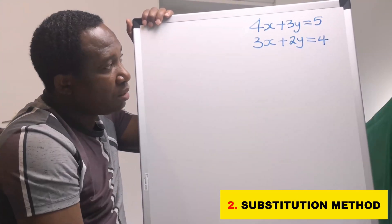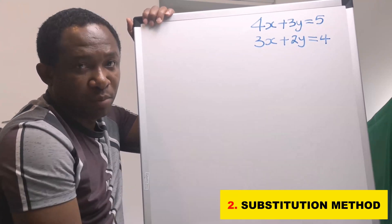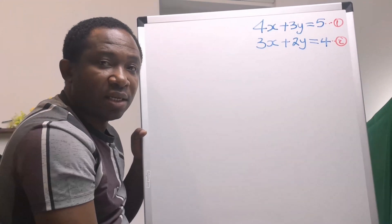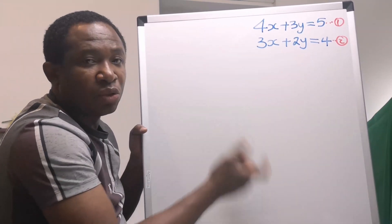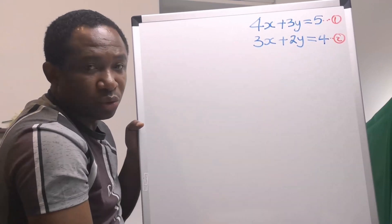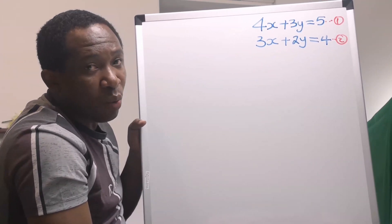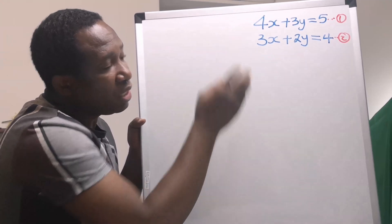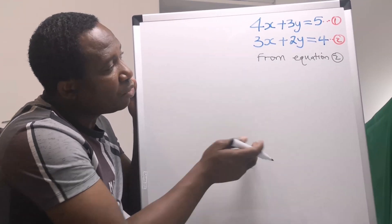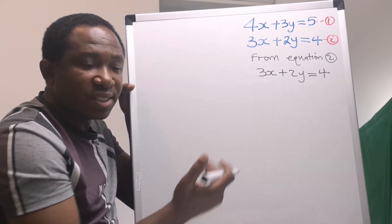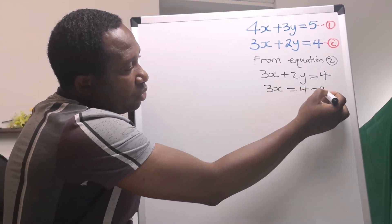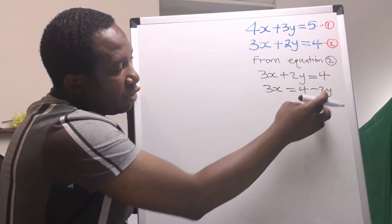We are going to repeat this question, this time around using the substitution method. This is equation 1 and this is equation 2. In substitution method, we do not draw a line to eliminate. What we do is take either equation 1 or equation 2, make either x or y the subject, and substitute into the other equation. I will consider equation 2 and make x the subject. If you decide to make y the subject, it is just a matter of choice. So 3x equals 4 minus 2y — I just moved 2y across, it becomes minus.